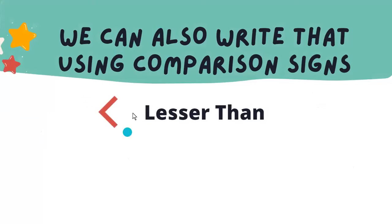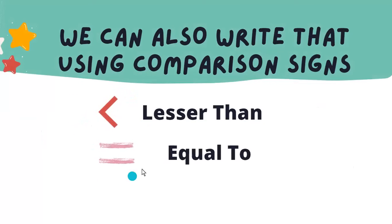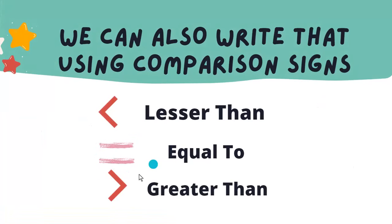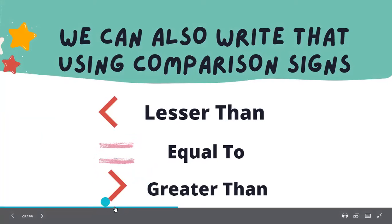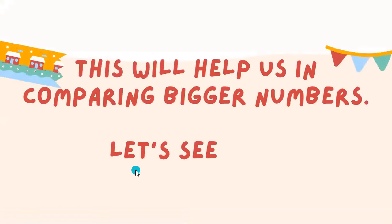This right here is called the less than sign. This one is called the equal to sign. And this sign is called the greater than sign. These will also help us in comparing bigger numbers — let's see how.